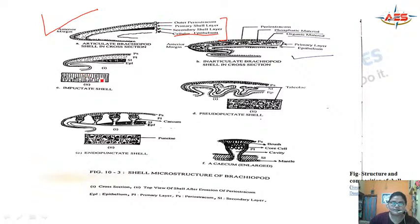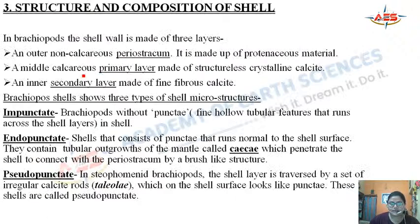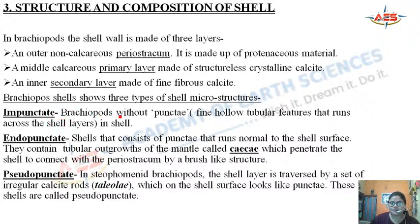Microscopic observation of brachiopod shells has shown certain microstructures called punctae. Based on these, shells are named impunctate, endopunctate, and pseudopunctate. Punctae are fine hollow tubular features that run across the shell layers. Impunctate shells do not have any punctae — there is no tubular outgrowth running normal to the shell surface.